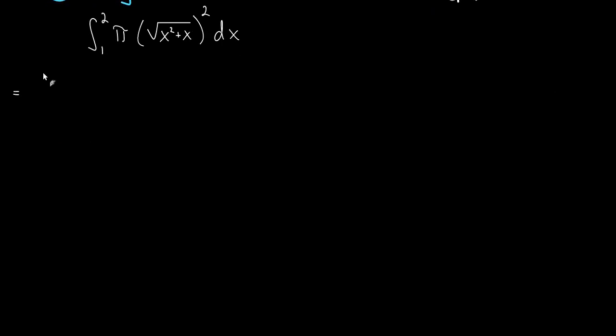Let's go ahead and solve this integral. This is going to be the integral from one to two of pi, and when we square a square root it just gets rid of it, so this is x squared plus x dx. Now we can pull that pi out because it's just a constant multiple, and then we can use the anti-derivative power rule. We add one to the exponent, that's x cubed, divide by that new exponent. Do that again, add one to the exponent, divide by the new exponent.